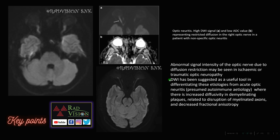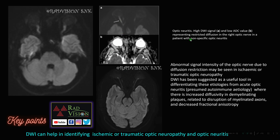Next: this was a case of optic neuritis. Here you can see there is classical restricted diffusion on DWI in both optic nerves. Here also you can see restricted diffusion on DWI in the optic nerves and even in the optic nerve heads — this was a case of optic neuritis with papilledema. Diffusion weighted imaging helps in identifying optic neuritis due to ischemic or traumatic causes and helps to differentiate ischemic and traumatic optic neuropathies from other causes like autoimmune causes.